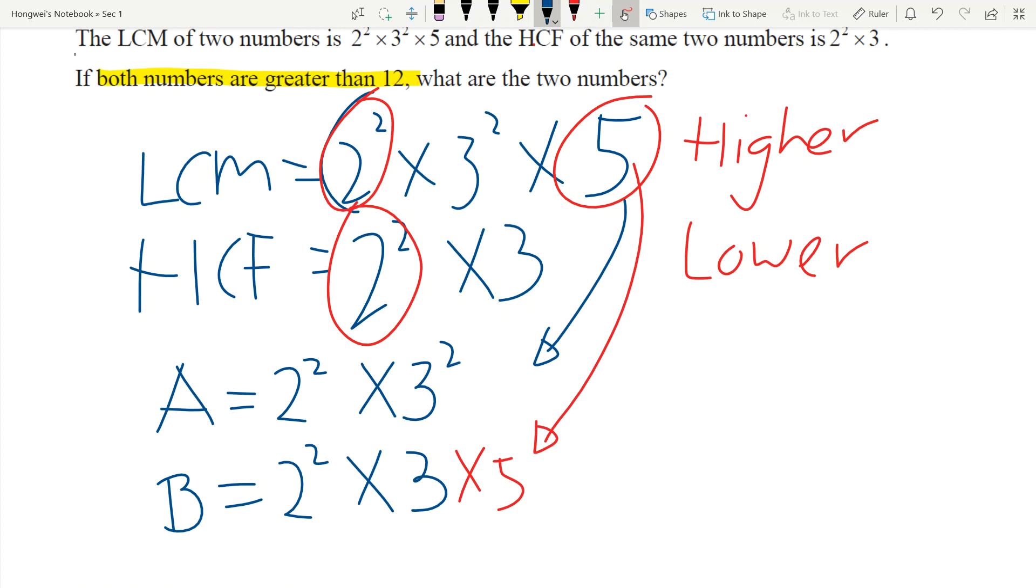Your number A is equal to 2², which is 4 × 9, which equals 36. And then your number B will be equal to 4 × 3 × 5, which is 12 × 5, which equals 60. And this is how you get...